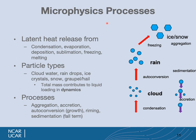Microphysics has to handle many processes that include latent heat release — for example, condensation, evaporation, deposition and sublimation, and freezing and melting as particles change from one species to another. The particle types we typically deal with are cloud water, raindrops, ice crystals, snow, graupel, and hail, distinguished by size and density. The total mass of the microphysics contributes to the dynamics through liquid loading.